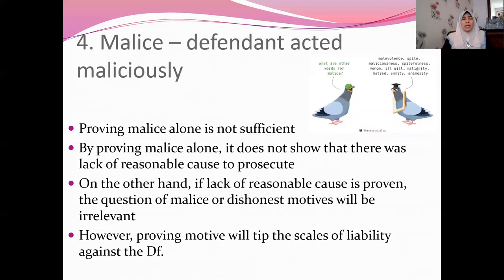The fourth requirement is malice — it must be proved that the defendant acted maliciously. If the defendant acted without malice, there is no way the plaintiff can bring an action for malicious prosecution, or if he does, he cannot win the case. However, proving malice alone is not sufficient, because it does not show there was a lack of reasonable cause to prosecute. All four elements must be proved together. Malice is one of the elements, but if lack of reasonable cause is proven, the question of malice or dishonest motive becomes relevant automatically.